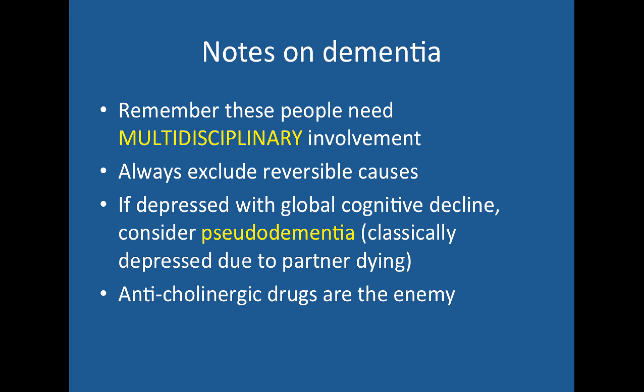A few other points on dementia: it requires a multidisciplinary team — OTs, PTs, someone to look at their home, and they'll need a package of care. Always exclude reversible causes. There's something called pseudodementia — when someone is so depressed they exhibit dementia signs — presenting with global cognitive decline, classically in a patient whose partner has died, leaving them very depressed. Anticholinergic drugs — antidepressants, antipsychotics, antihistamines — are the enemy of dementia, so consider whether any might be worsening their clinical state.